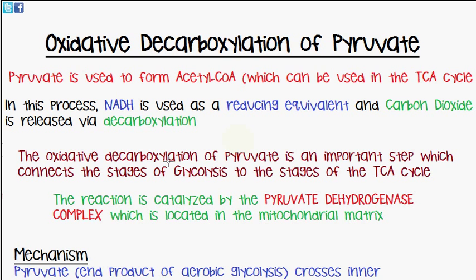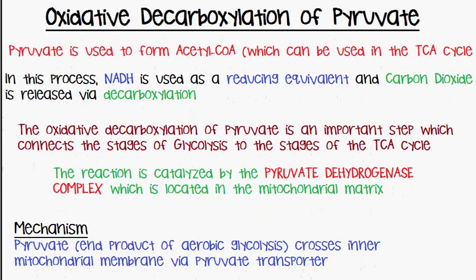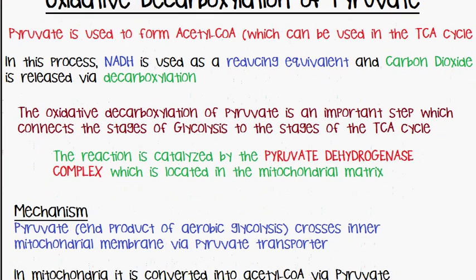The oxidative decarboxylation of pyruvate is an important step which connects the stages of glycolysis to the stages of the TCA cycle. The reaction itself is catalyzed by the pyruvate dehydrogenase complex, which is located in the mitochondrial matrix.